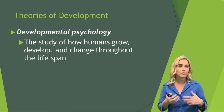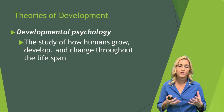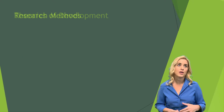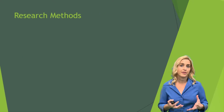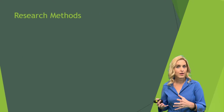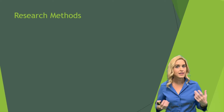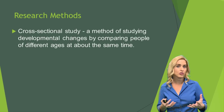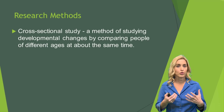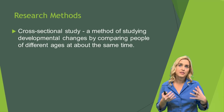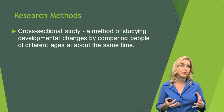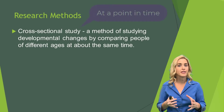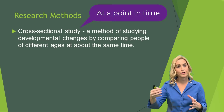We want to know how this growth and change affects our behavior and mental processes. There are some different research methods that we use in human development that you may not see in other areas of psychology. One is called cross-sectional research, or a cross-sectional study, and this is a method of study where we look at individuals at a specific point in time at different ages.